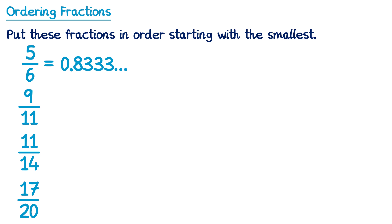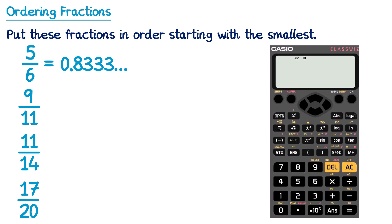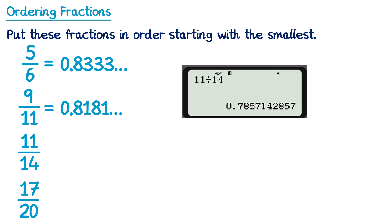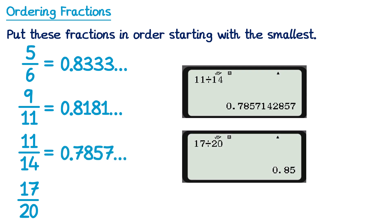You may have an older style calculator where the method is slightly different. For 9 elevenths on the older style calculator: press 9, then the fraction button, then 11, then equals, and then press the S and D button. Press that a second time and you can see the full expanded decimal: 0.818181 and so on. Repeating those processes for the other fractions gives 0.7857 for 11 over 14 and 0.85 for 17 over 20.